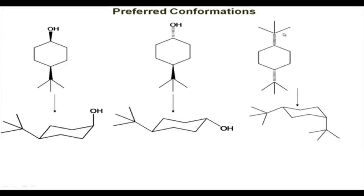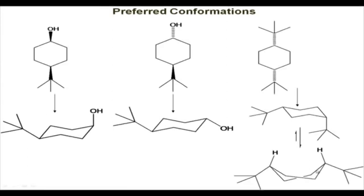In the case of cis-1,4-di-tert-butylcyclohexane, you are forced to put one of the tert-butyl groups in the axial position. So instead, it adopts a twist-boat conformation. These two diequatorial tert-butyl substituents are in equatorial positions, leaving the flagpole hydrogens intact. Remember, twist-boat is a conformer and not the boat because in the twist-boat the flagpole hydrogens are not as close as in the boat form, so the flagpole hydrogen interaction is a little bit less.